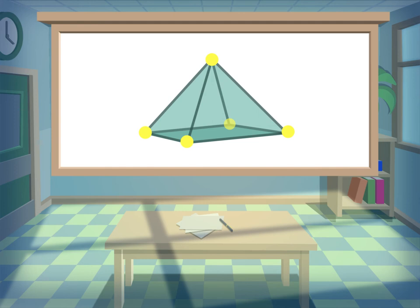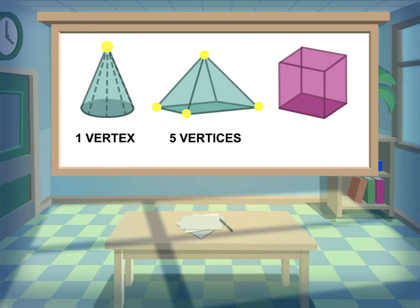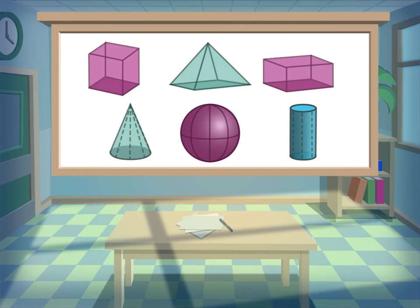A 3D shape can have one vertex, five vertices, or they can have eight vertices. Or they may have no vertices at all, like the sphere.